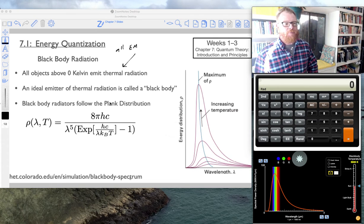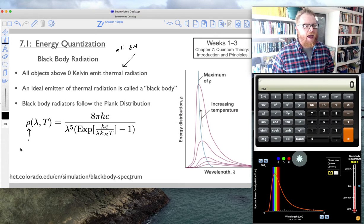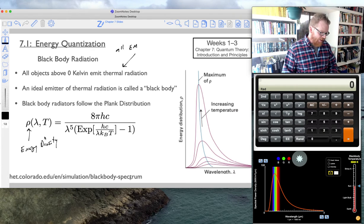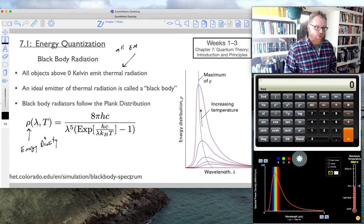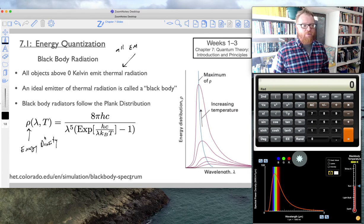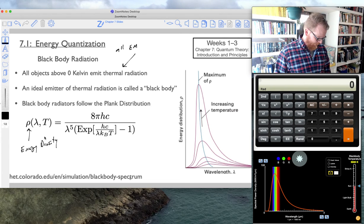So this equation right here, this ρ, is given as energy density, and as you can see, that is a function of wavelength as well as temperature. So the energy density depends on what your wavelength is, and it also depends on what the temperature is.